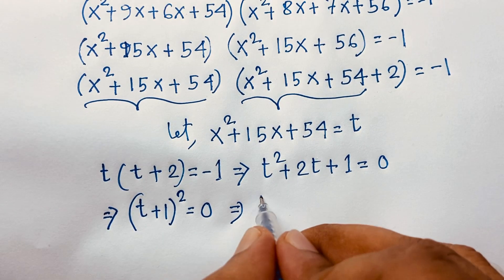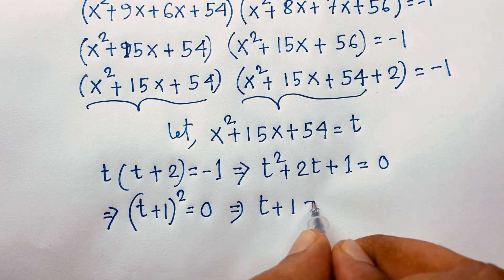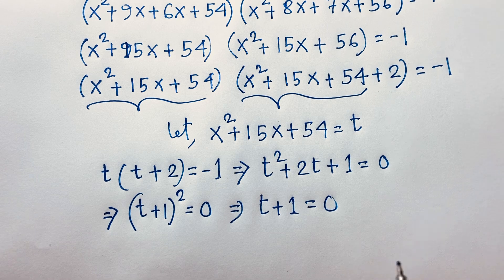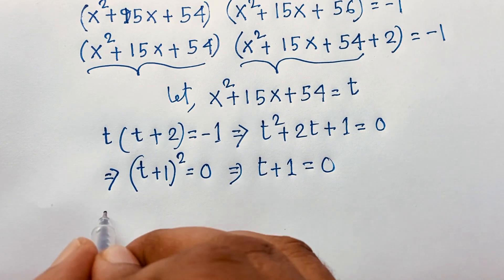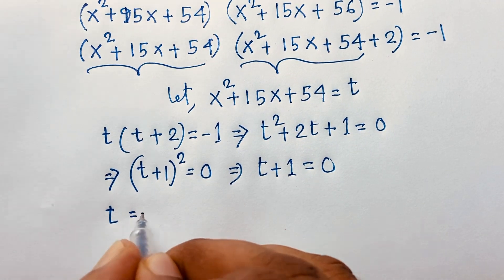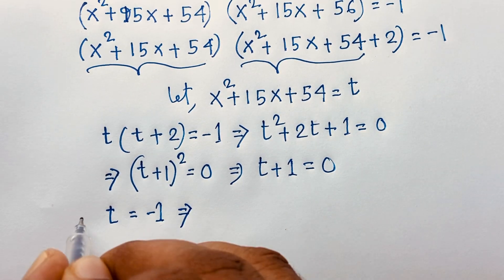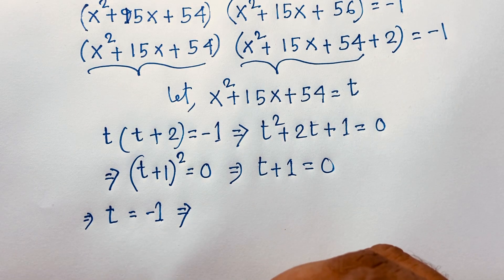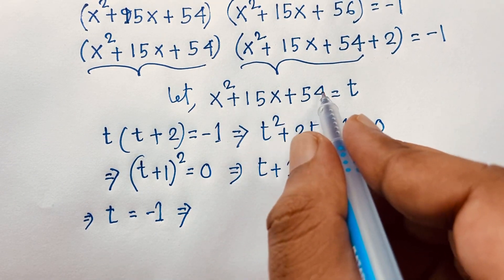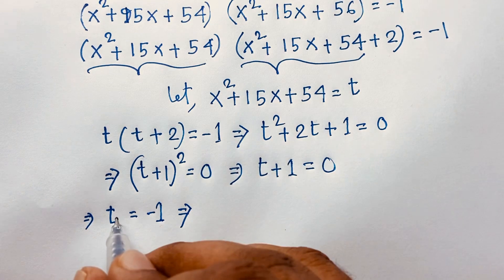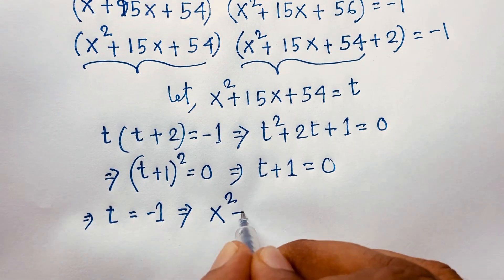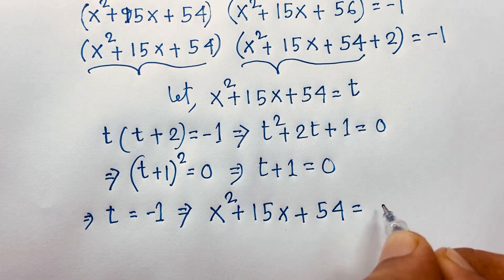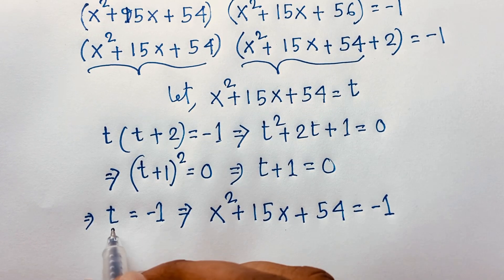From t + 1 = 0, we get t = -1. Recalling that t = x² + 15x + 54, we substitute back: x² + 15x + 54 = -1.